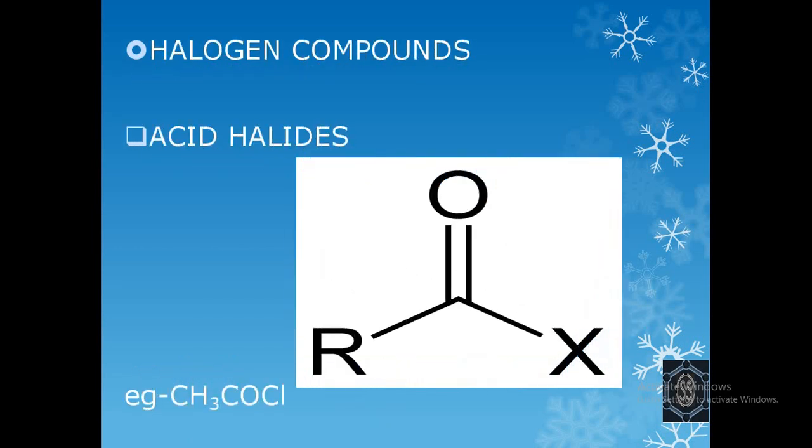Next is acid halides. Here the group is COX. X is the halogen, which can be fluorine, chlorine, or bromine. For example, CH3COCl. Here, H is replaced by the COCl acid halide group.